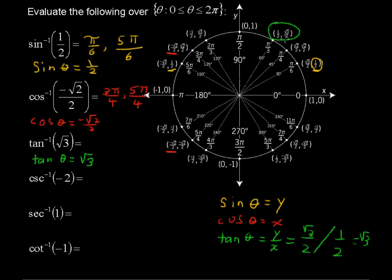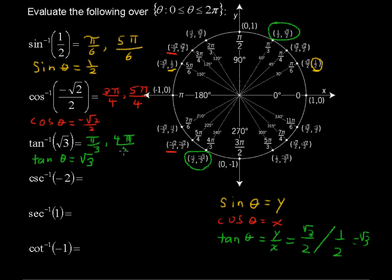Wherever we see the coordinates (1/2, √3/2), and they both have to be the same sign because we have a positive √3, that's what we're going to find. So we have π/3 as one answer, and the other is way down here where both coordinates are negative — a negative divided by a negative is positive — so 4π/3 is the other solution to the inverse tangent of √3.